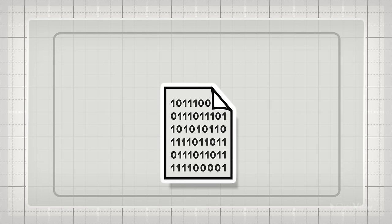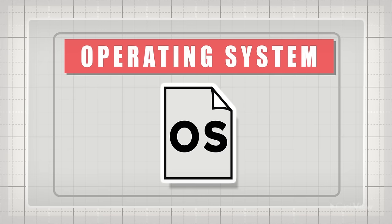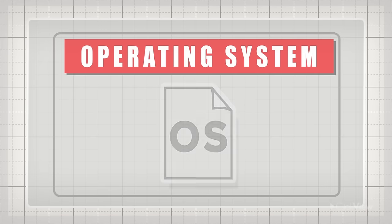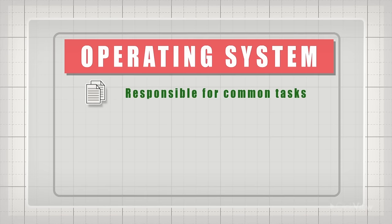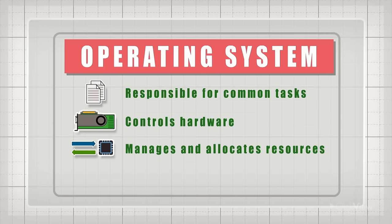The solution was to write a brilliant piece of software called an operating system, or OS. The OS would take over the tasks common to many programs. Today, operating systems control the hardware of the computer. They manage and allocate resources, and provide an interface for the user.